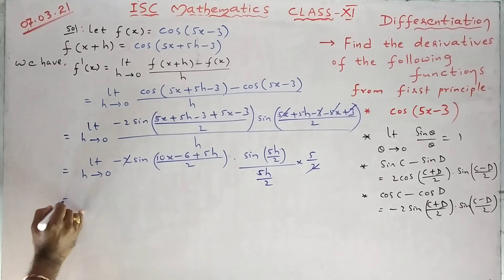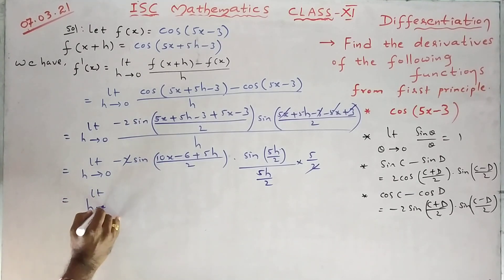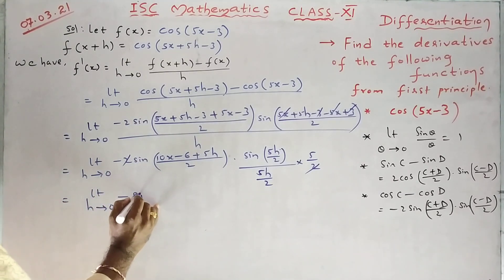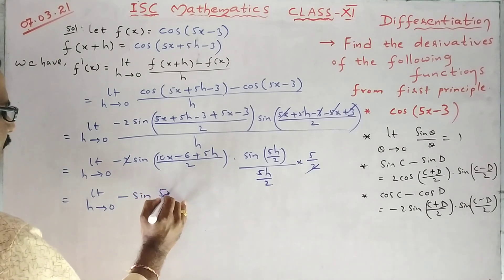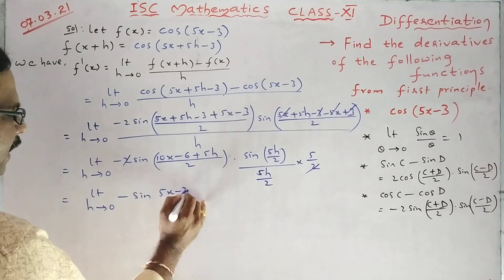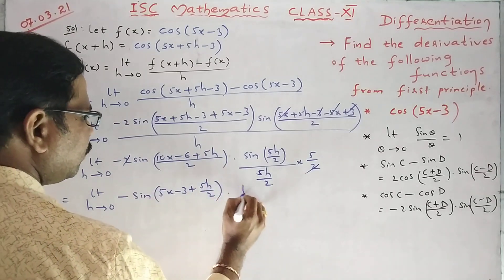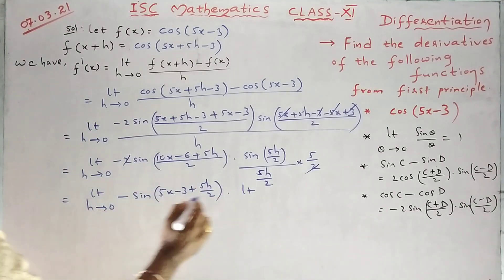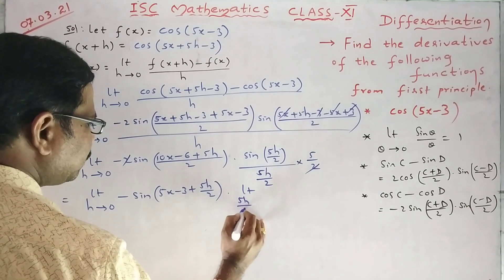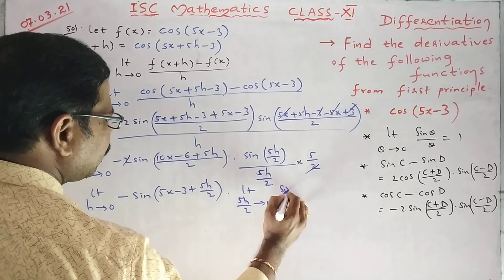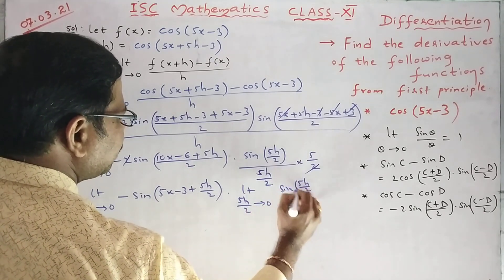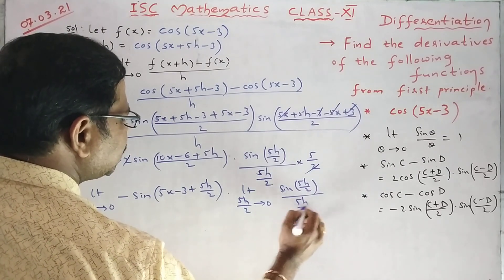Here we should have sin 5h by 2 by 5h by 2 into 5 by 2. Okay, 2, 2, 2 gets cancelled. Limit h tending to 0 minus sin 5x 10x by 2 minus 3 plus 5h by 2 into limit as h tending to 0, 5h by 2 also tending to 0.